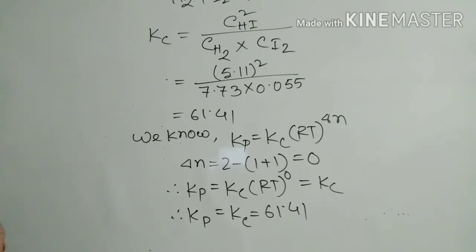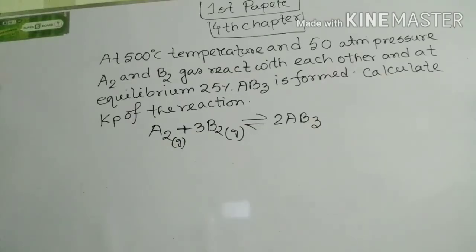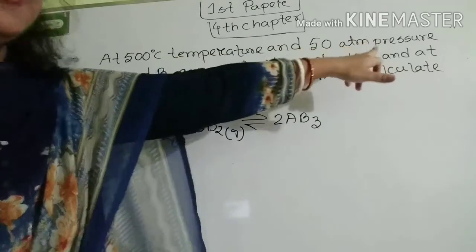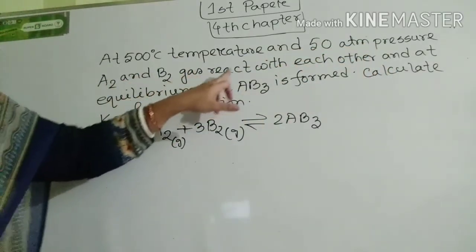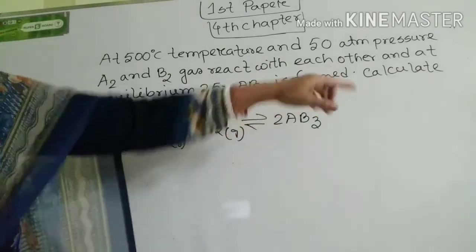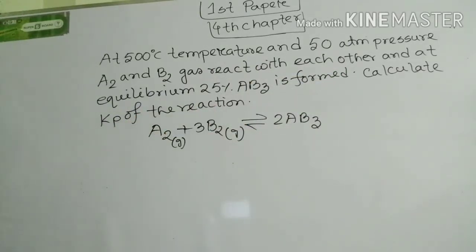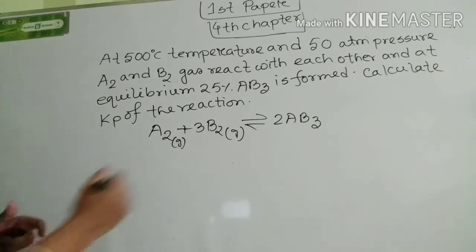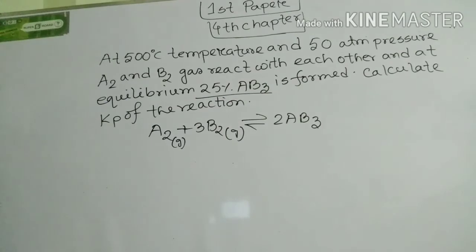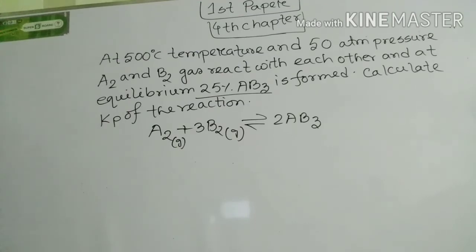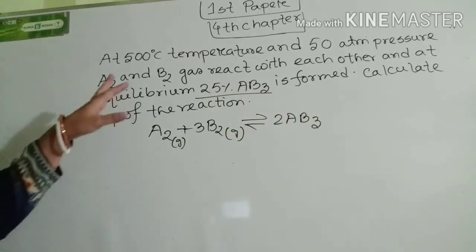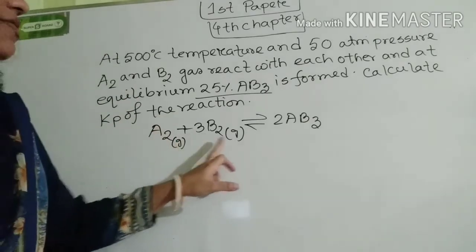Now I will discuss another math problem from this chapter. At 500°C and 50 atm pressure, A₂ and B₂ gas react with each other, and at equilibrium 25% AB₃ is found. Calculate Kp of the reaction. Note that 25% AB₃ refers to the product formed, not a rate of decomposition, since rate of decomposition refers to the percentage of reactant that decomposes.